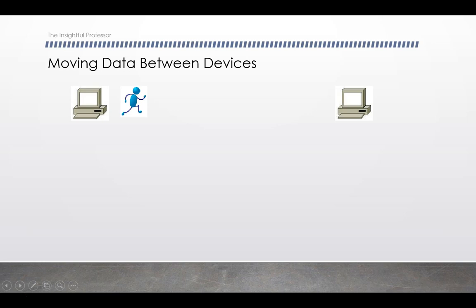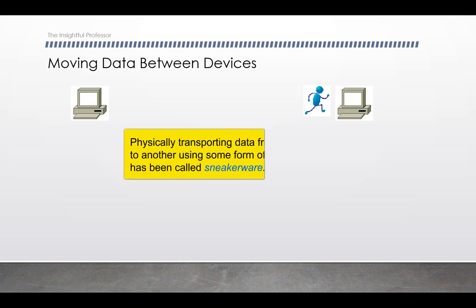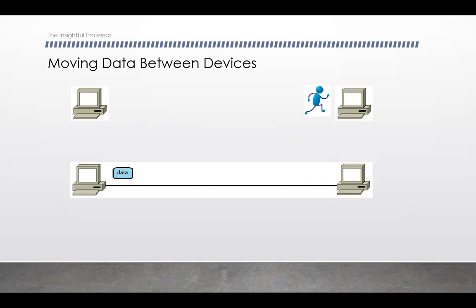Moving data from one computer to another using removable media like a flash drive or DVD requires that this physical device be transported to another destination. This transport can take quite a bit of time if the two computers are separated by a large geographic expanse. Physically transporting data this way has been called sneakernet, because the media is moved by walking from one computer to another. However, by connecting two computers, we can move data between them very quickly. In this video, we will introduce terminology and fundamental concepts associated with computer communication networks.